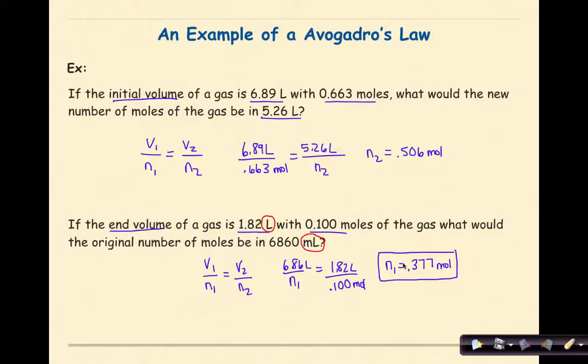And I see that by looking at my answer, my number of moles of gas is 0.377 moles. That is much larger than my final mole of gas, which is 0.100 moles. And this is a brief example of Avogadro's law.